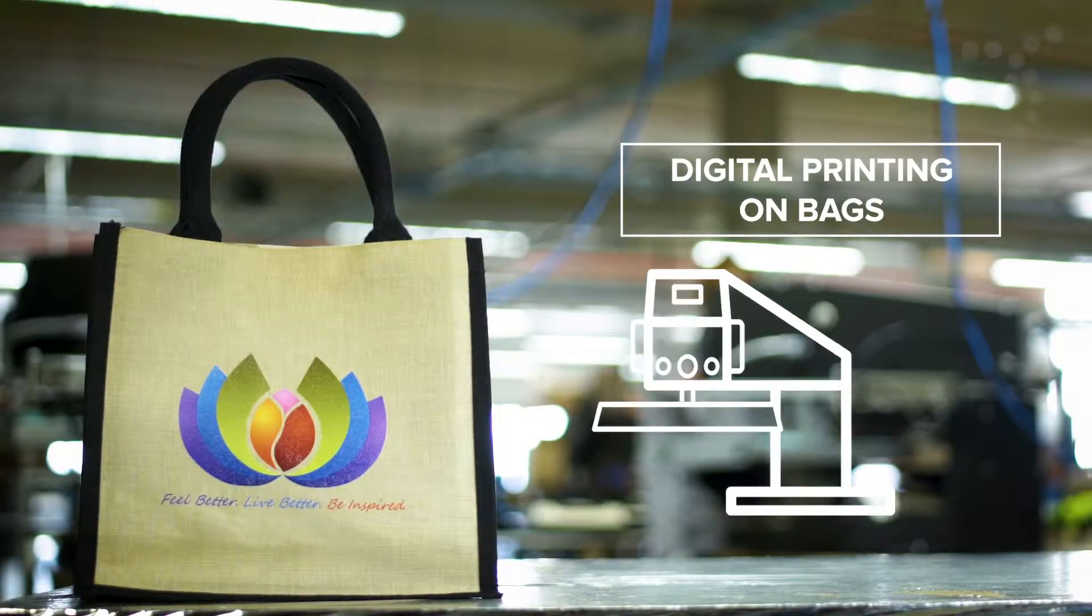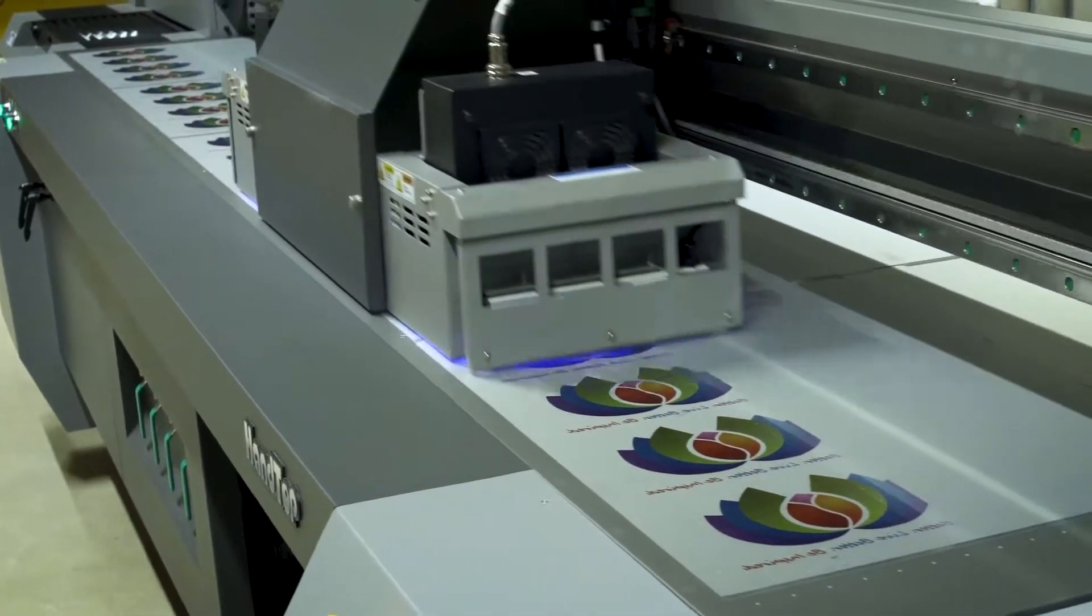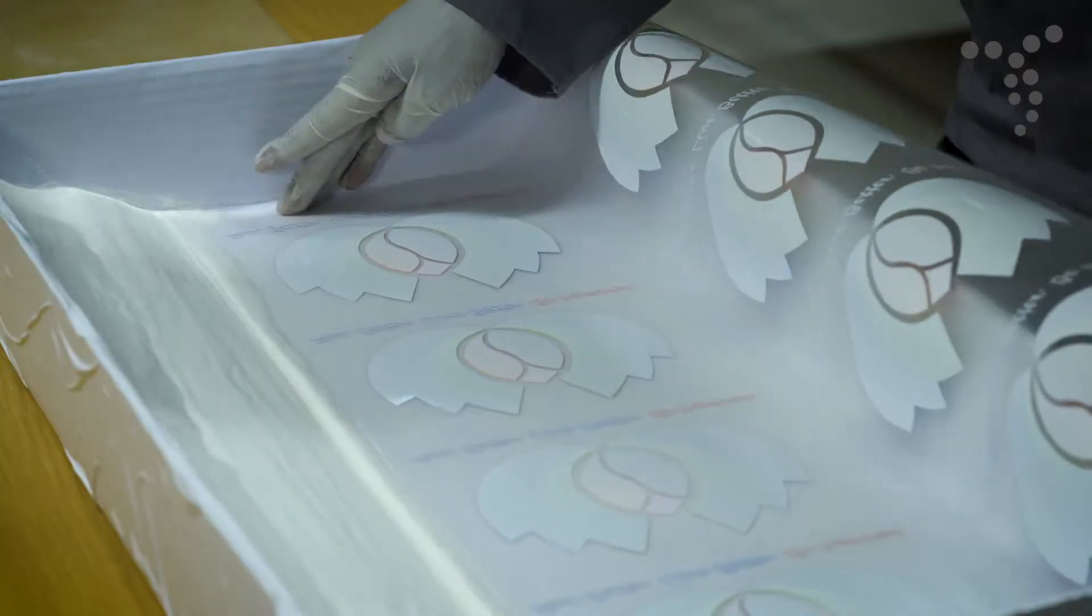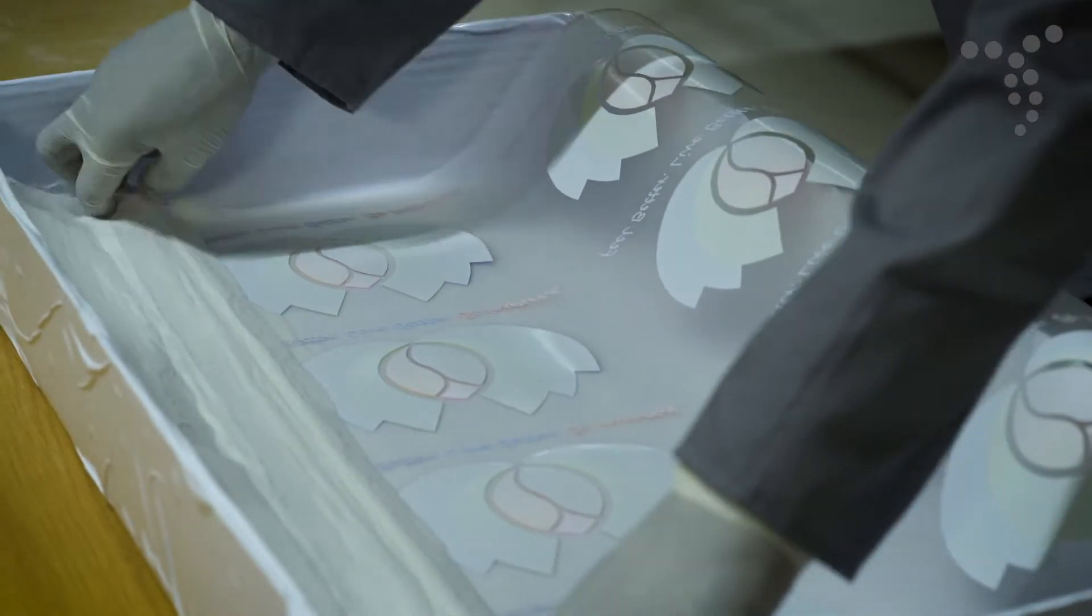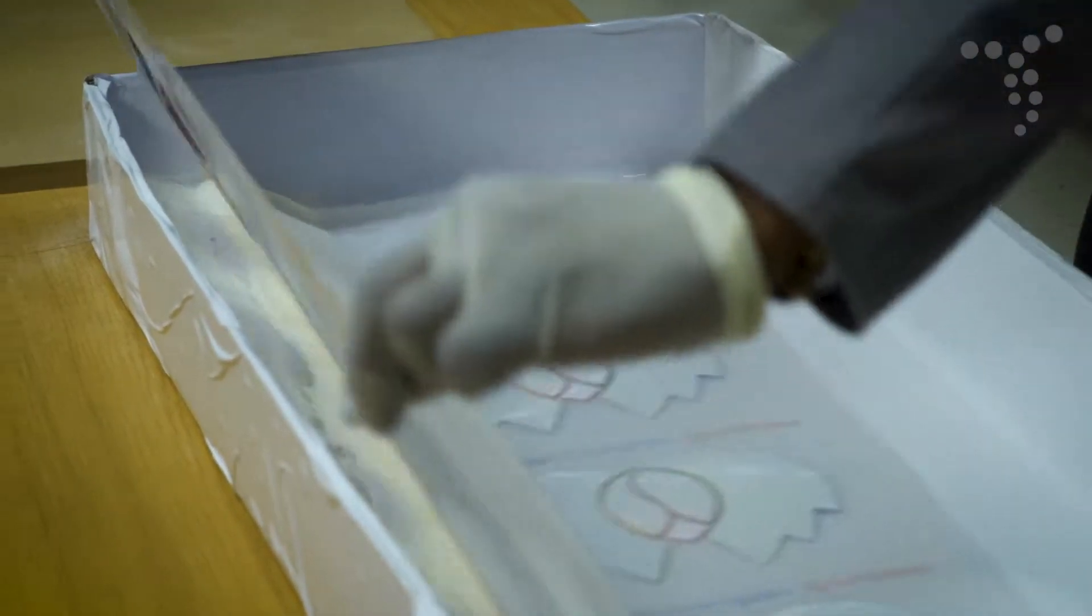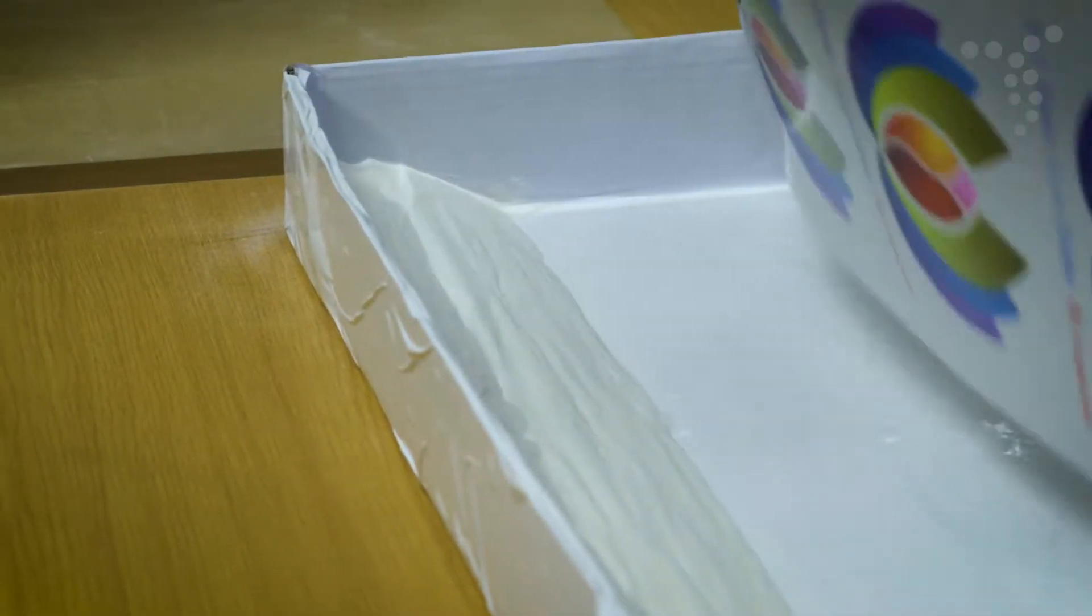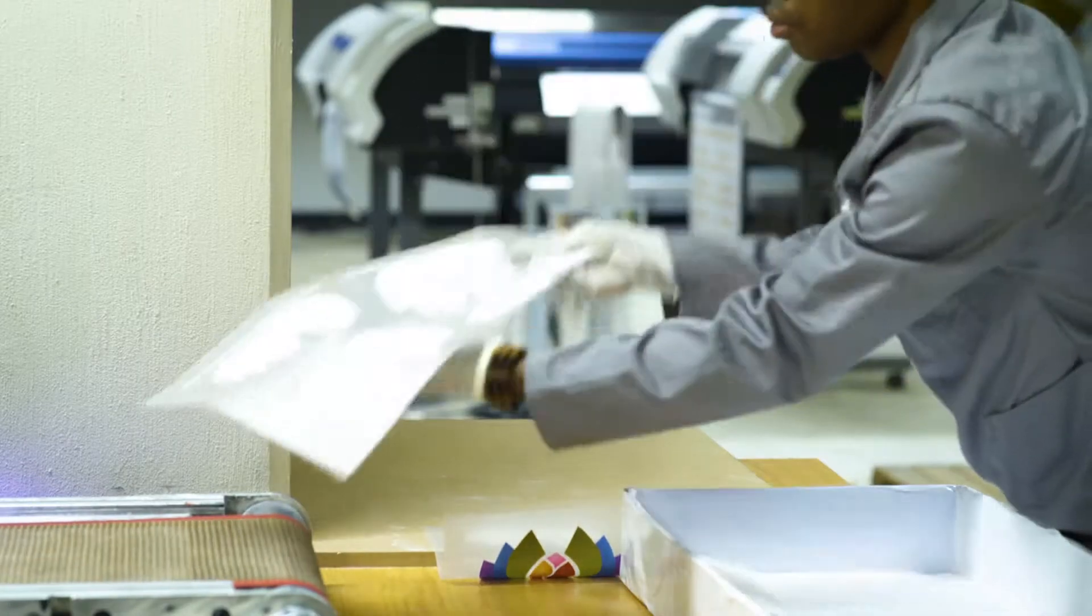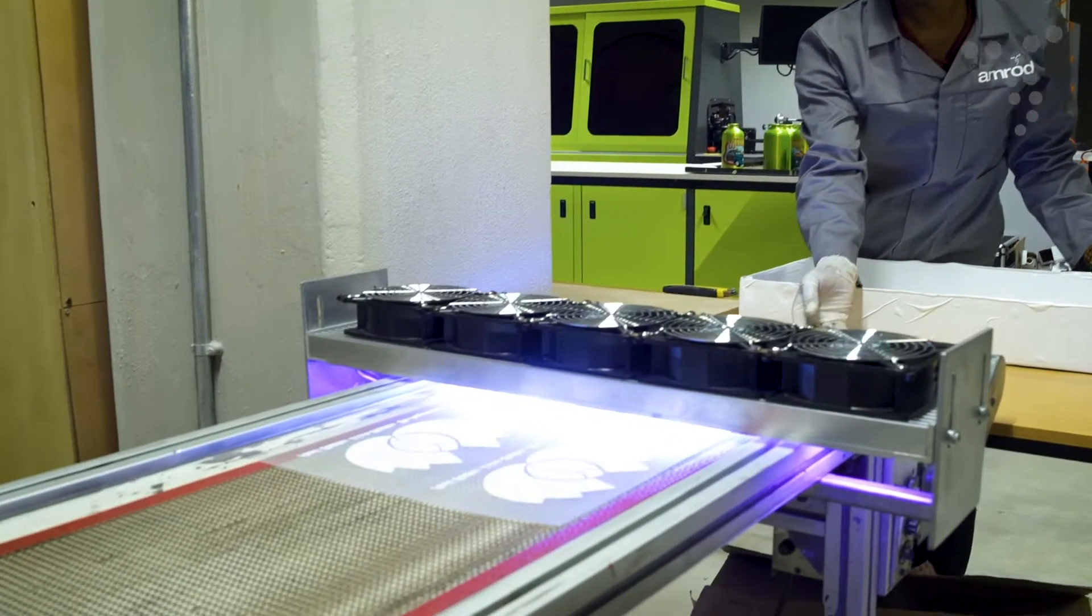Digital printing on bags is achieved by printing a full-color digital image onto a special transfer paper. This paper is then coated with a unique powdered glue which is cured onto the ink with UV rays. Thereafter, it's placed onto the product which is inserted into a heat press, and the heat from the press allows the print to be transferred directly onto the fabric.